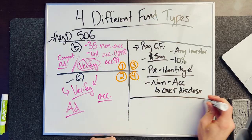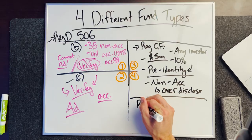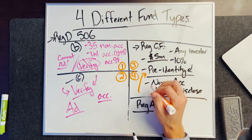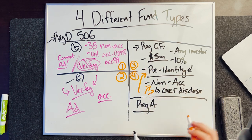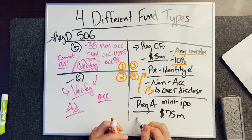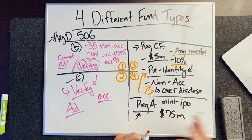The next group is called a Reg A offering. A Reg A fund is very similar to Reg CF — you have to pre-identify assets, you can raise from non-accredited investors but you have to over-disclose, and the same 10% rule applies for any investor. However, Reg A has tier one and tier two. Tier two is what most people do, and you can raise up to $75 million. They call this a mini IPO.